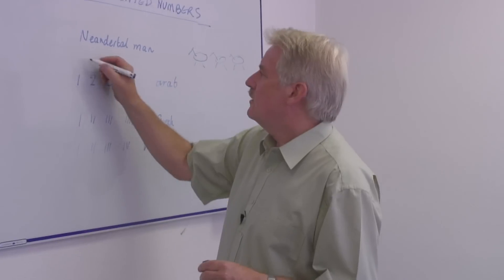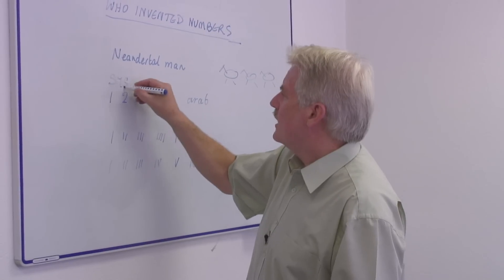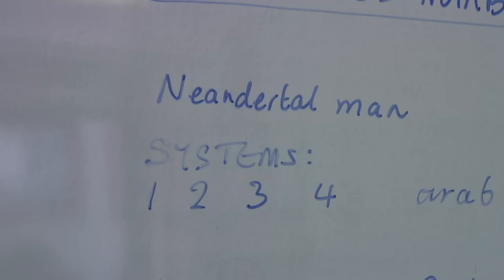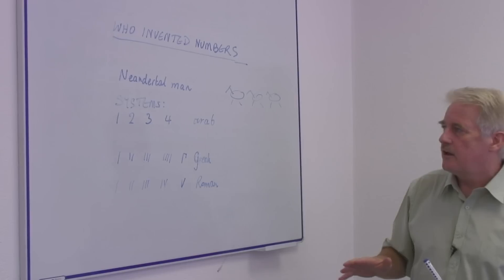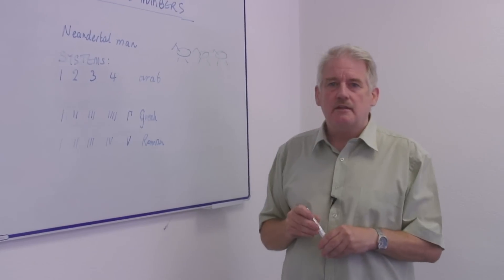And here we've got Neanderthal man, but below him we actually have number systems, and these number systems may be an Arab number system, Greek or Roman. These are systems of numbers, ways of representing numbers.